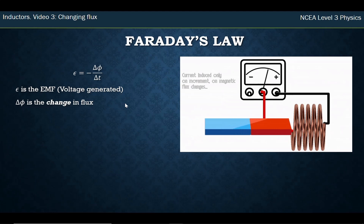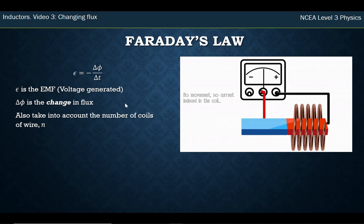If we change it faster, we generate more voltage. If we change it slower, we generate less voltage. But we also have to take into account the number of coils of wire. This formula is just for one coil of wire, one loop. If we have a thousand, we times it by a thousand. If we have a hundred, we times it by a hundred, et cetera.